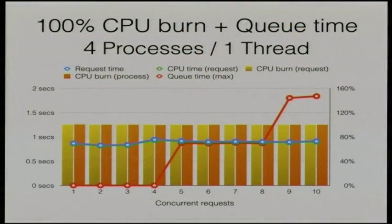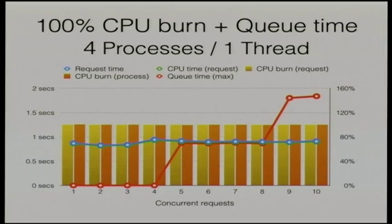With a memory-constrained host, the number of processes we can realistically create might be quite small. The use of a small number of single-threaded processes introduces a greater risk of what's called backlogging — that is, if the number of concurrent requests is greater than the number of processes and we have a sequence of long-running requests, new requests may have to wait. If we start a number of concurrent requests at the same time, we can see how, once we exceed four — which is the number of processes we had — the maximum time that the extra requests had to wait, shown as the queue time in the red line, jumped out to almost a second.